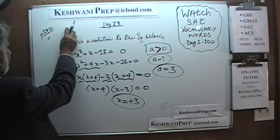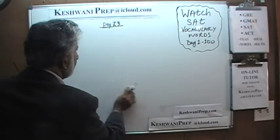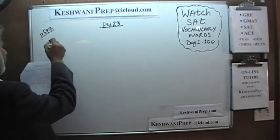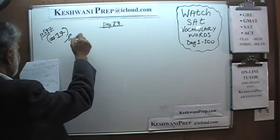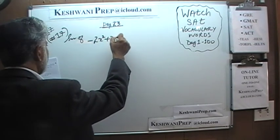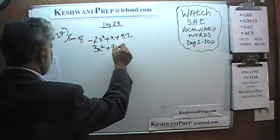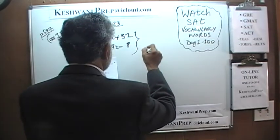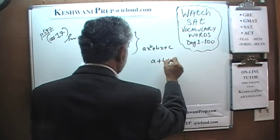Let's do the next one, number 17. In number 17 we are told that we have two equations and we need their sum. The two expressions are: negative 2x squared plus x plus 31, and 3x squared plus 7x minus 8. When we add them up we get something in the form ax squared plus bx plus c. The question is: how much is a plus b plus c?